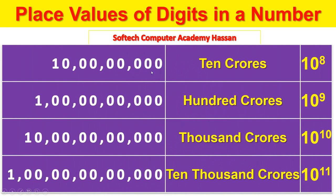Ones, tens, hundreds, thousands, ten thousands — that is 10 to the power of 8.